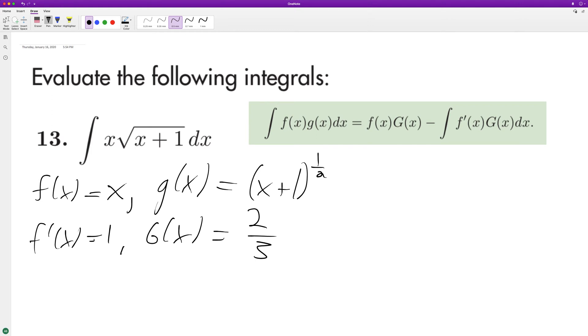All right, so following this formula here, we'll have f of x times G of x—so it's gonna be equal to x times the integral of lowercase g of x...